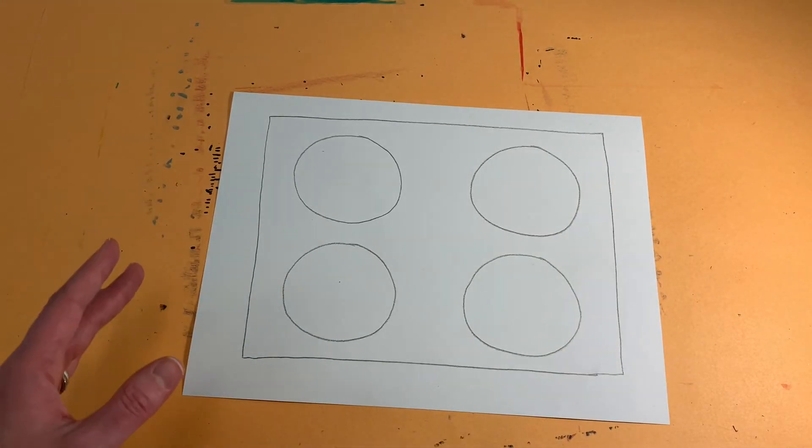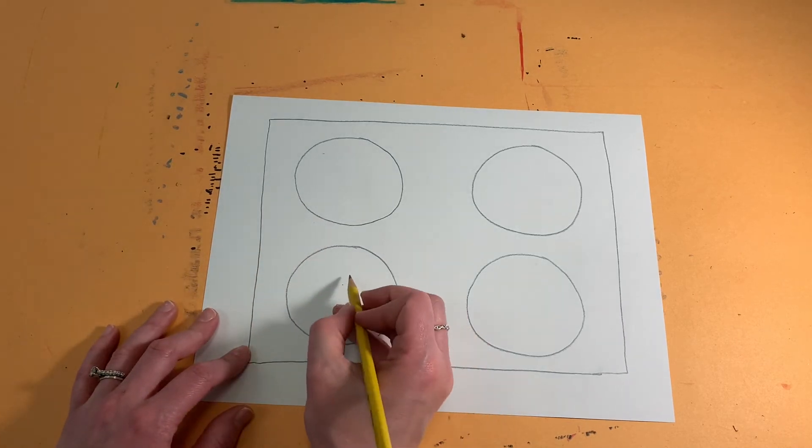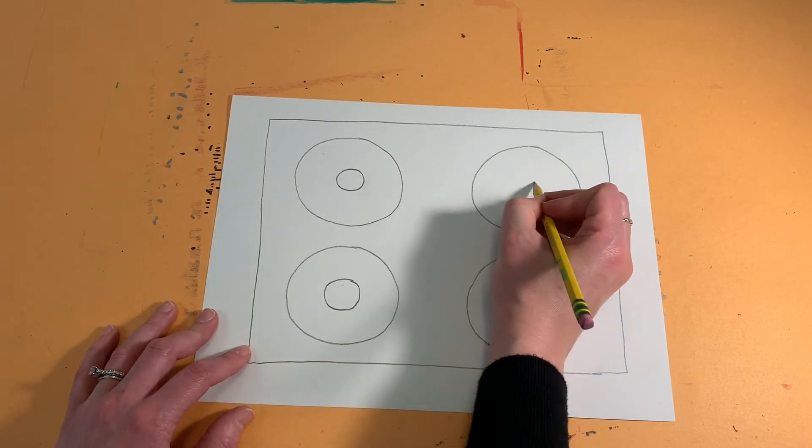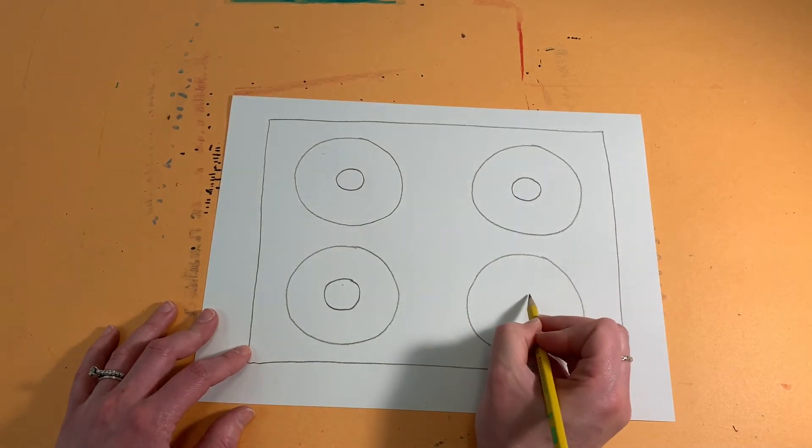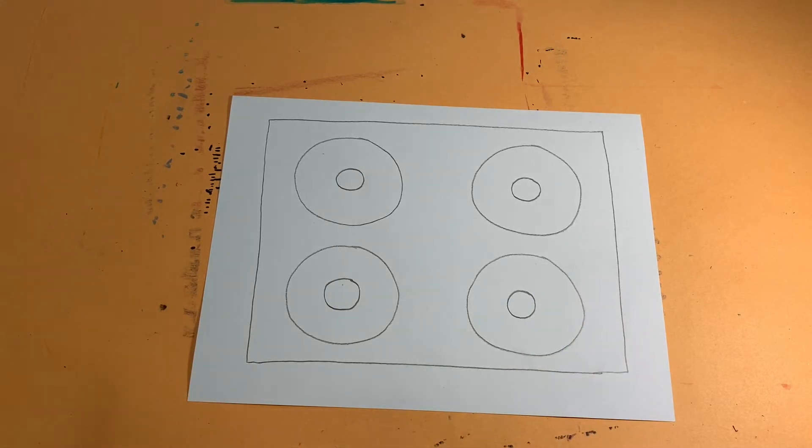All right, so there's the outside shape of our doughnuts and now we're going to create the inside doughnut hole with a smaller circle on the inside. And again please don't worry about it being perfect. All right, so there's our doughnuts. We have our box.